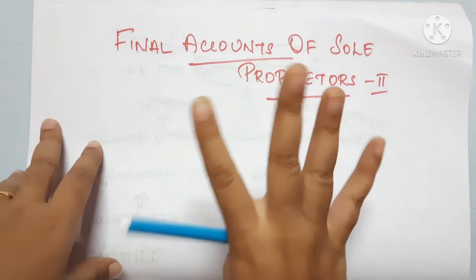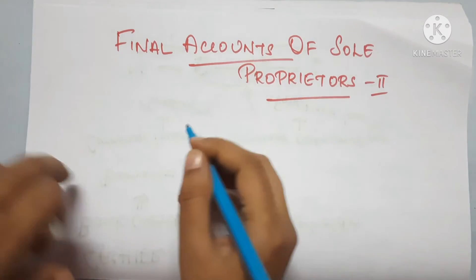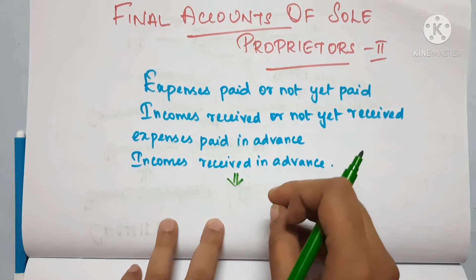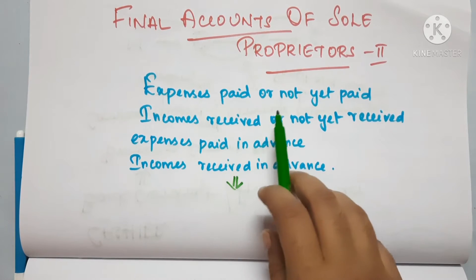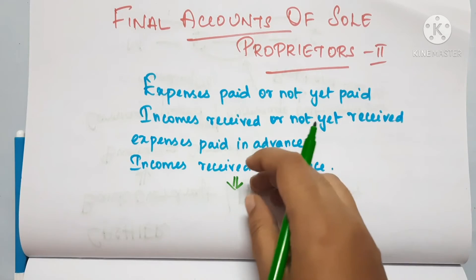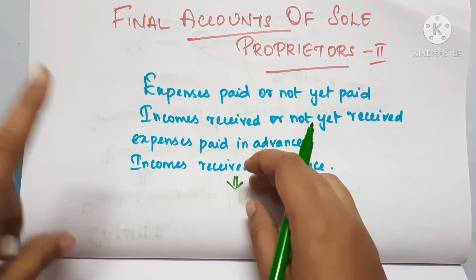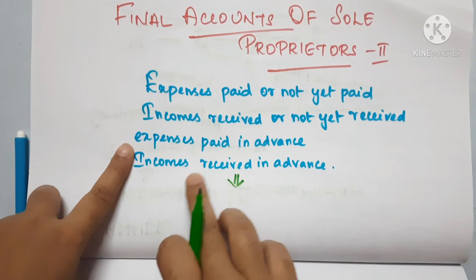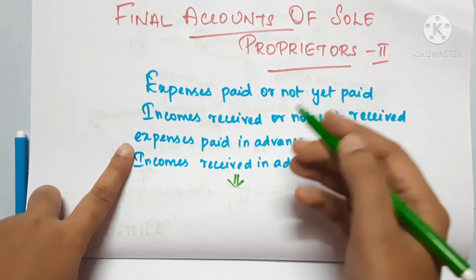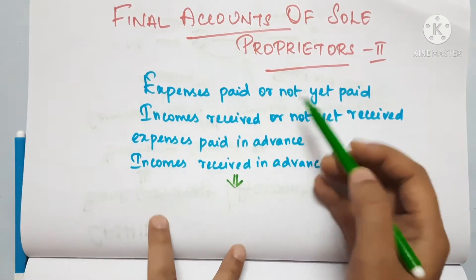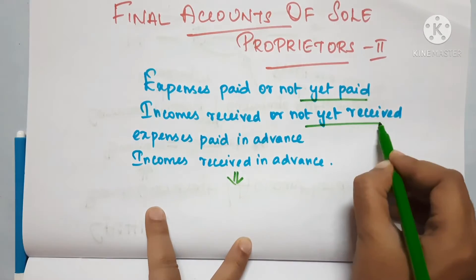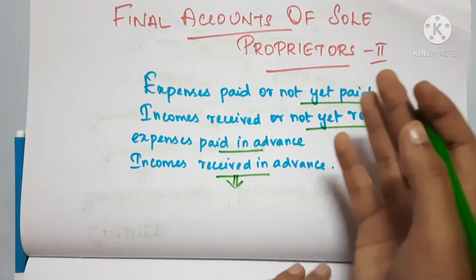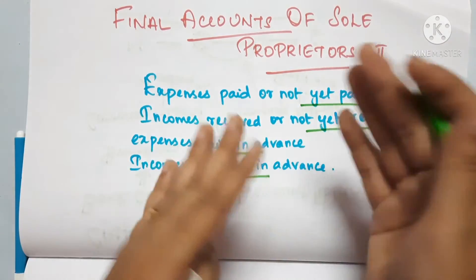First, let's talk about 4 important terms. The first one is expenses paid or not paid — if you pay the expenses, you pay the same. The second one is income received or not yet received. Next, expenses paid in advance and income received in advance — so we pay the expenses and we receive the income. These are the two key pairs.